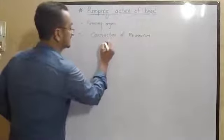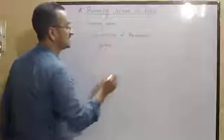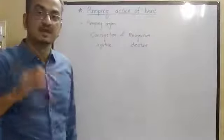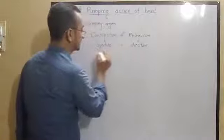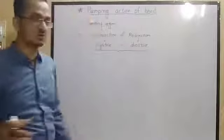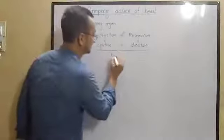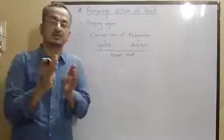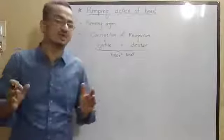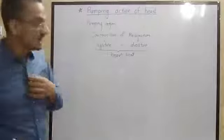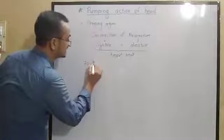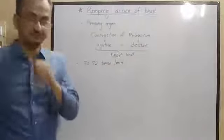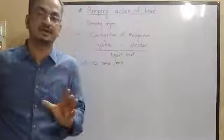The contraction of the heart is called systole, while the relaxation of the heart is called diastole. This contraction and relaxation together are collectively called a heartbeat. The normal heart beat rate is about 72 times per minute.